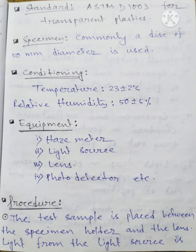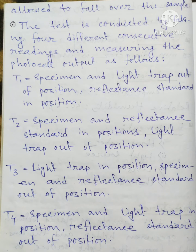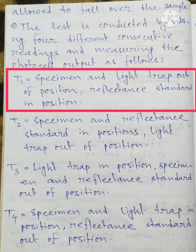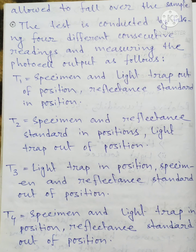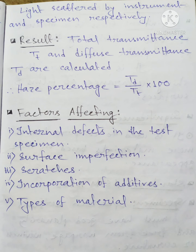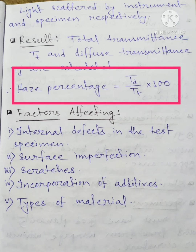For the procedure, the test sample is placed between the specimen holder and the lens. Light from the light source is allowed to fall over the sample. The test is conducted by taking four different consecutive readings and measuring the photocell output. T1: specimen and light trap out of position, reflectance standard in position. T2: specimen and reflectance standard in position, light trap out of position.